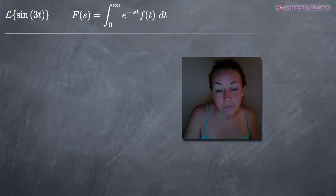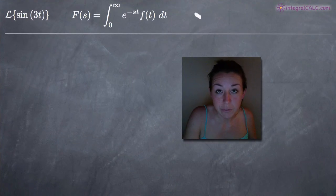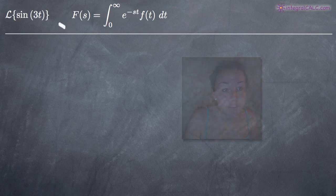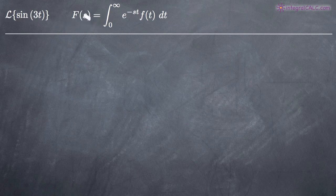Today we're going to be talking about how to perform a Laplace transform using the definition of Laplace transforms. In this particular problem, we've been asked to perform the Laplace transform of sine of 3t. The formula for a Laplace transform is denoted by capital F of s, and it's equal to the integral from zero to infinity of e to the negative st — where s is a constant — multiplied by our original function f of t.